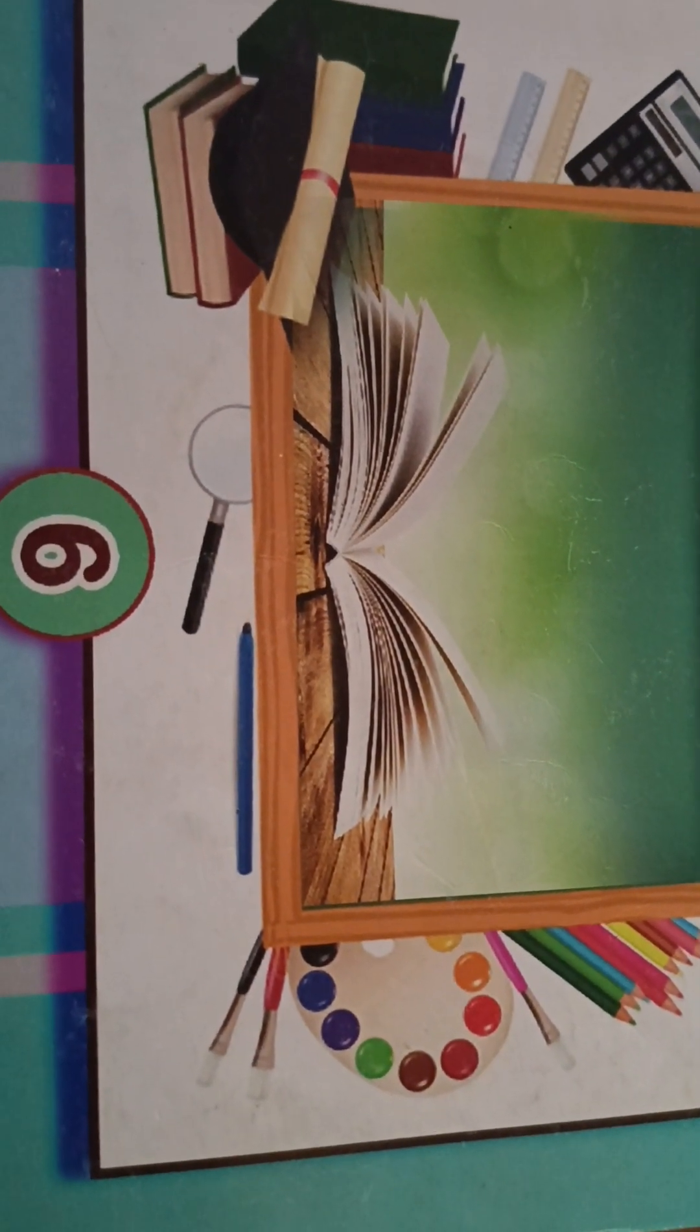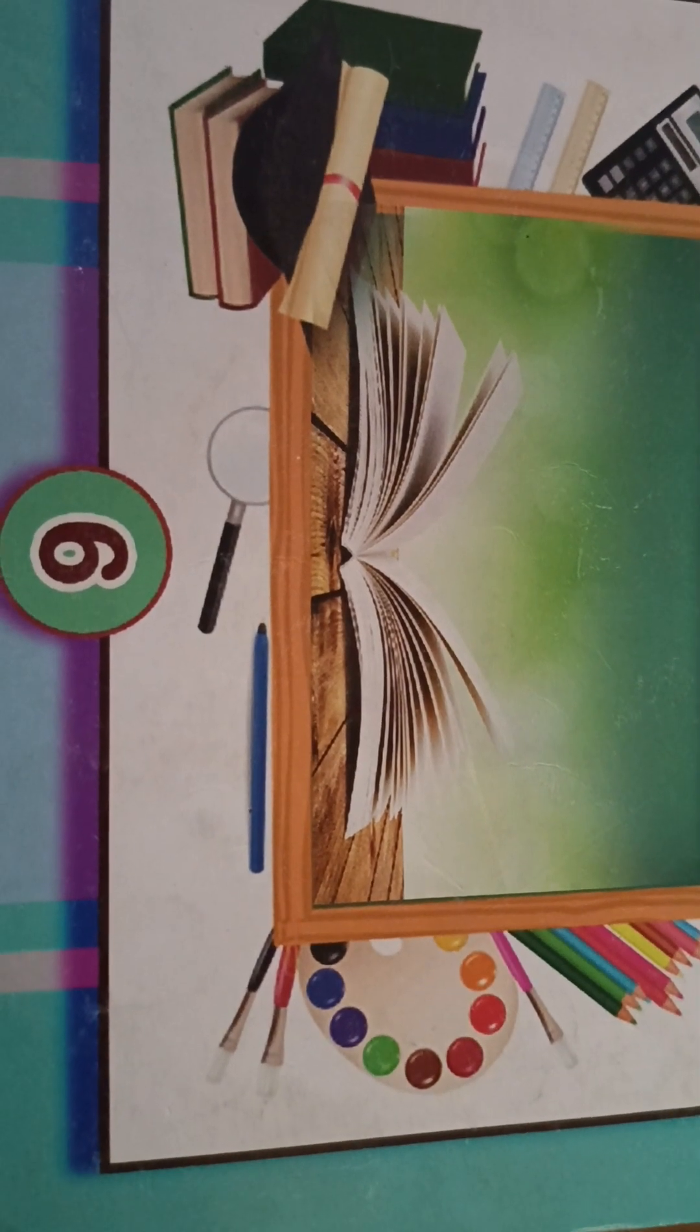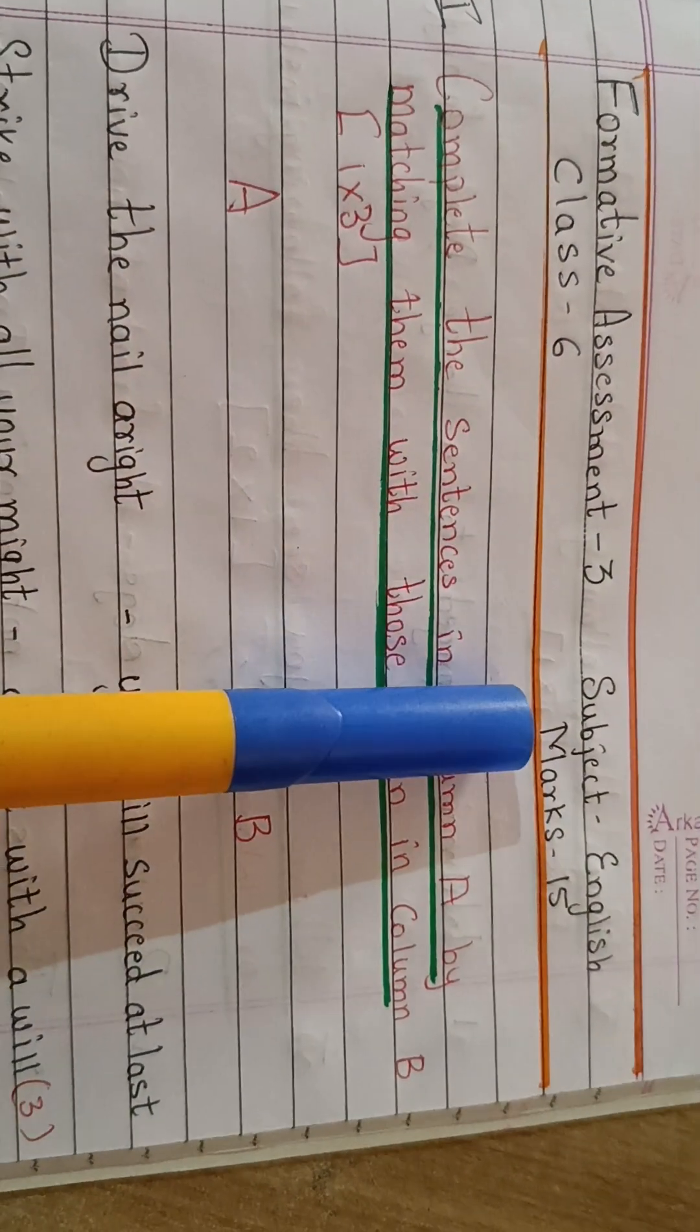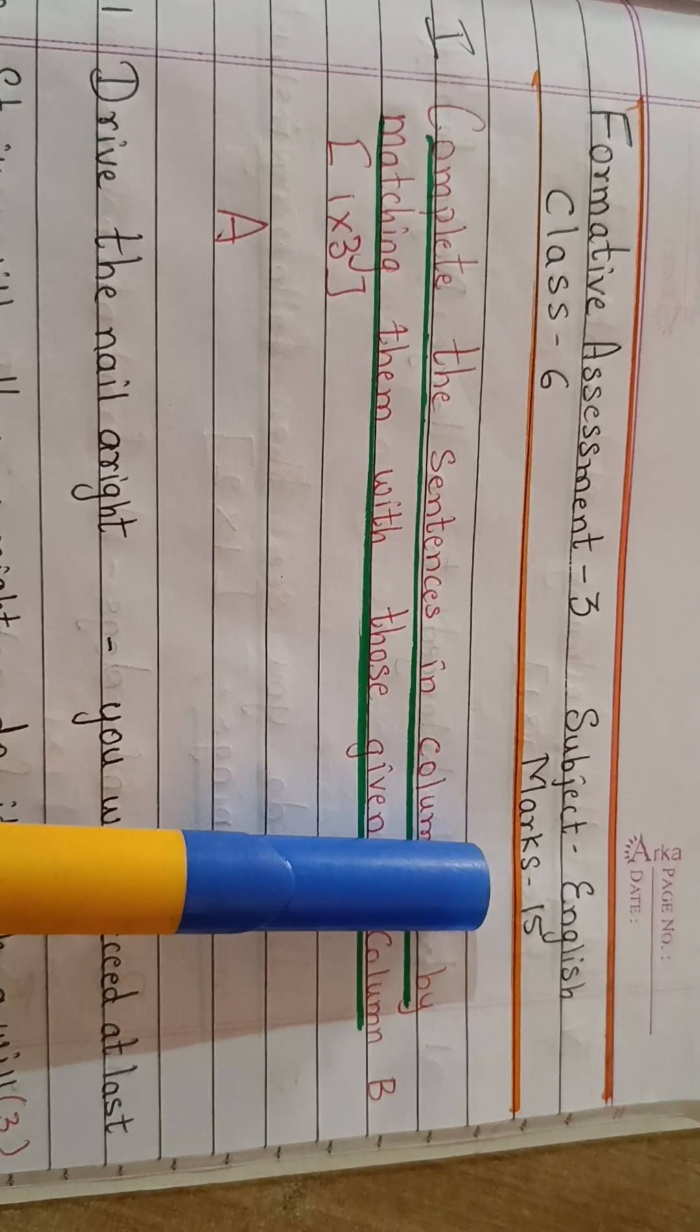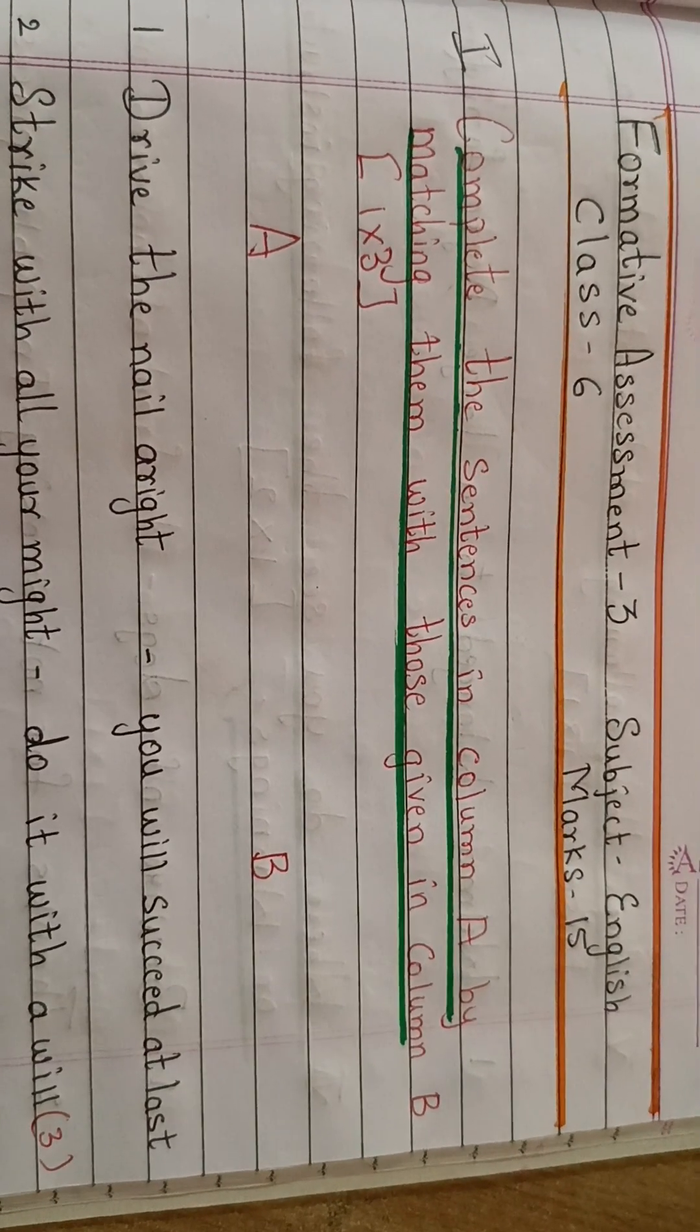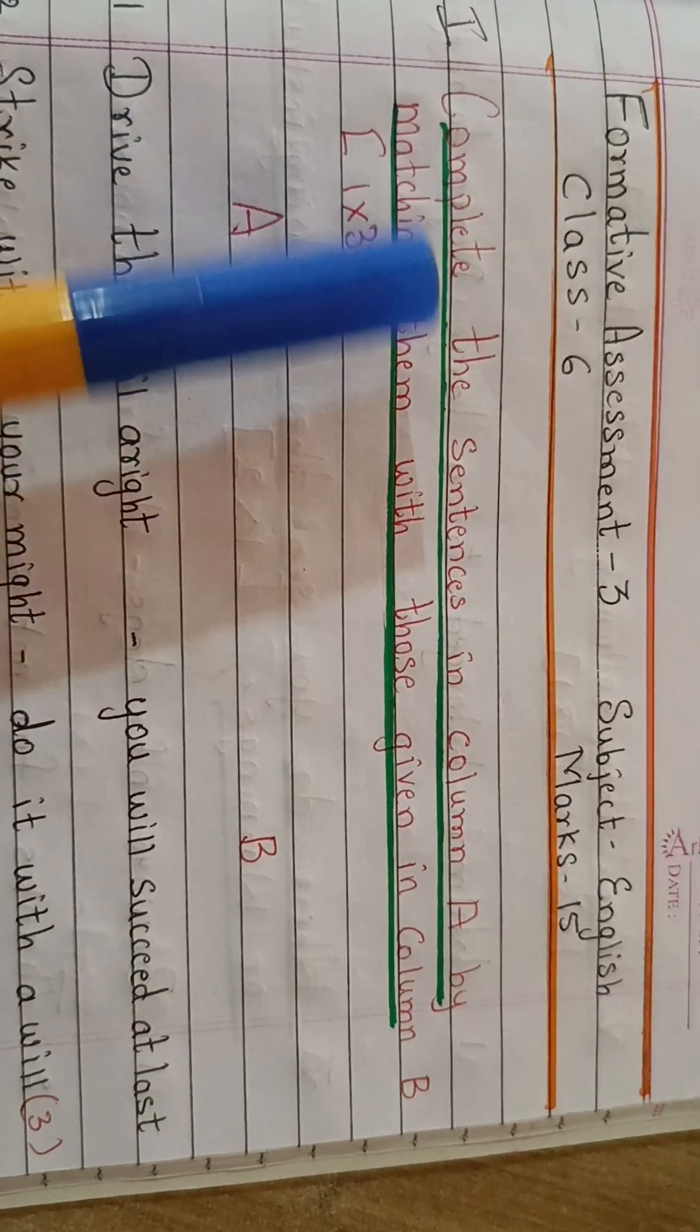Hi everybody, in this video we are going to deal with the model question paper for English subject, formative assessment number three, class six. This is a formative assessment three, subject English for class six, and marks carried are fifteen marks. So this model question paper is set up for fifteen marks. Let's go through the question paper and discuss. Here you find a model question paper with the answers, so nothing to worry about.